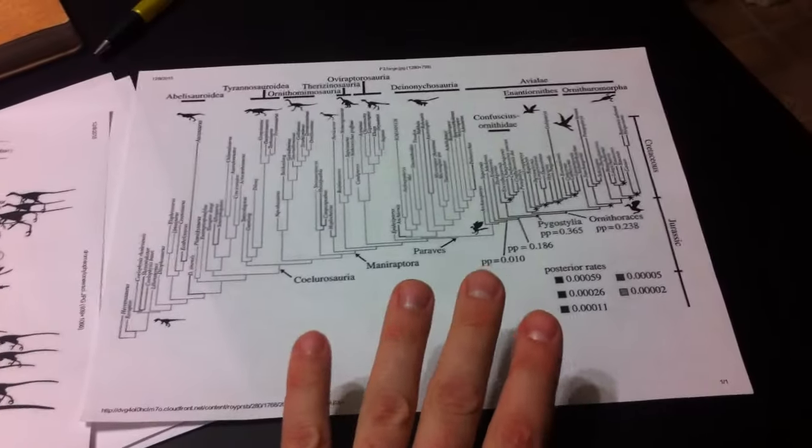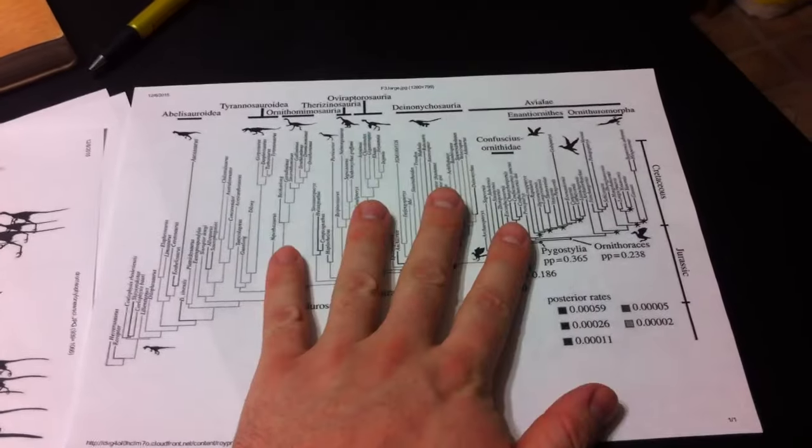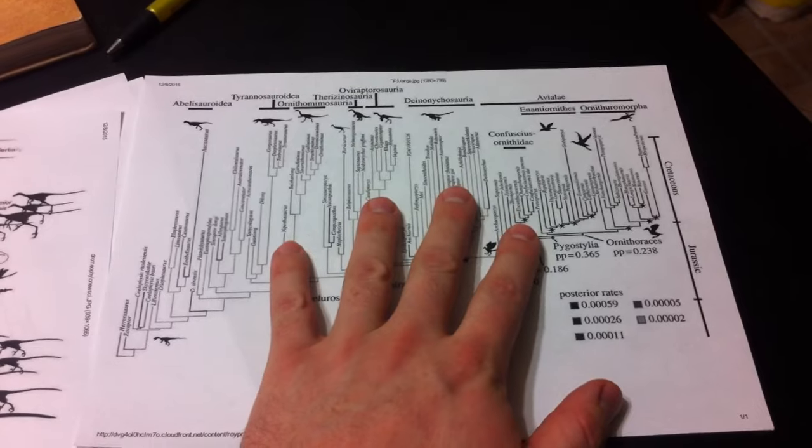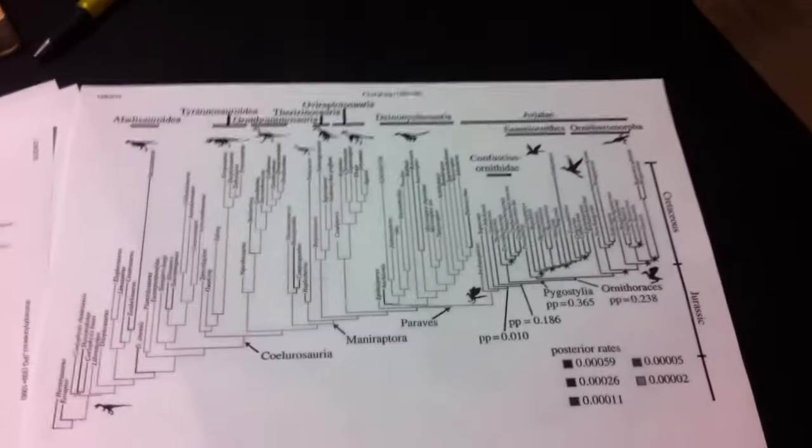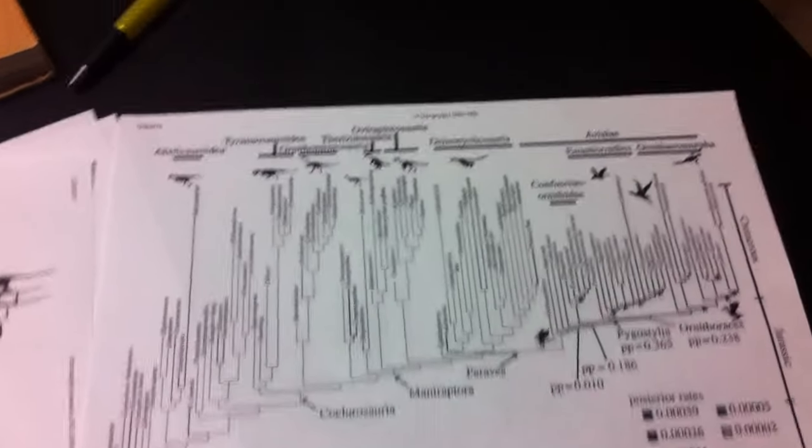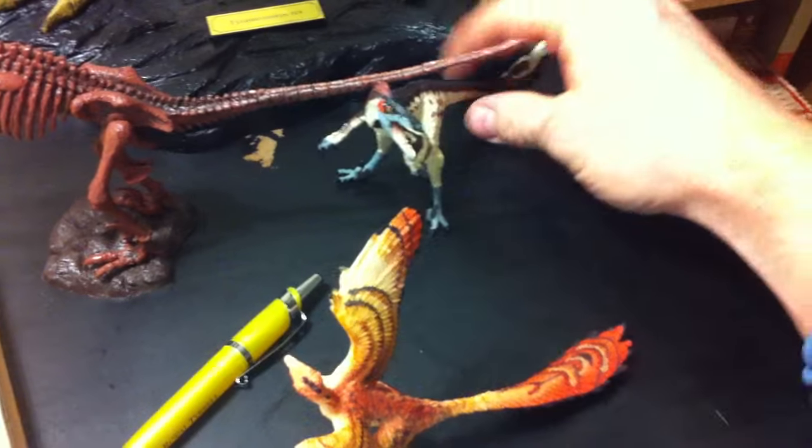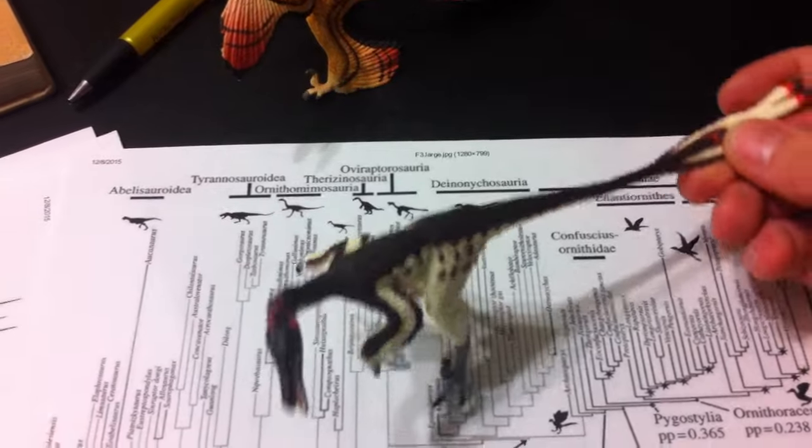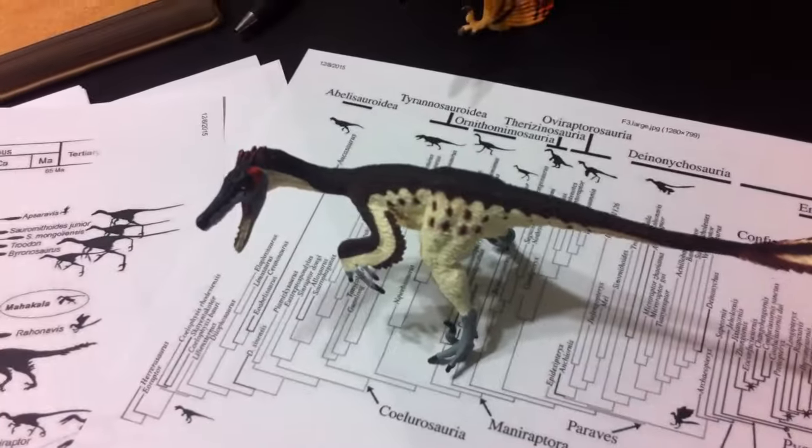So, once we drop this distinction between reptiles and birds, and adopt cladistic taxonomy based on Darwin's theory of common ancestry, then we can really make a lot more sense out of the fossil record. And also, it tells us some pretty interesting things, such as velociraptors being descended from flying ancestors, and probably being covered in feathers. So, that's pretty cool.